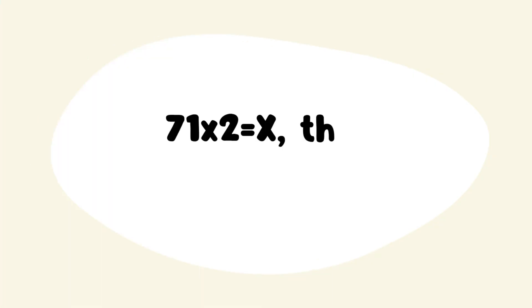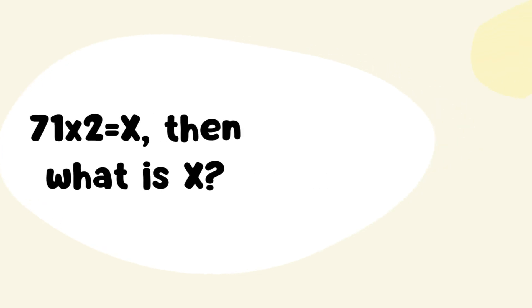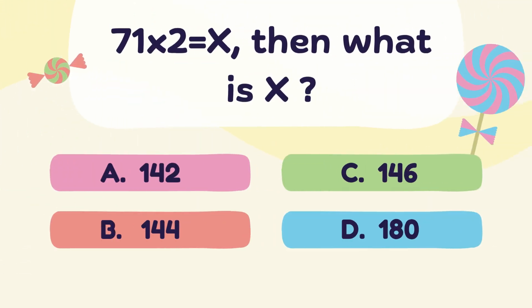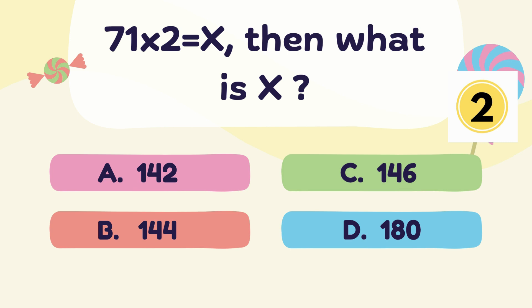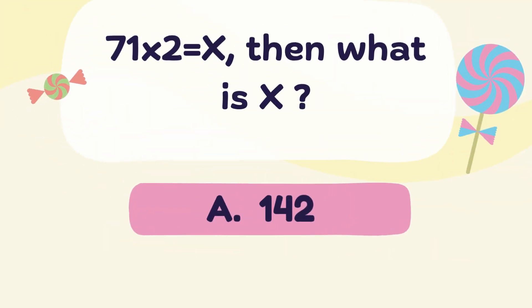Next question: 17 multiply 2 is equal to X, then what is X? Answer: Option A. 142.